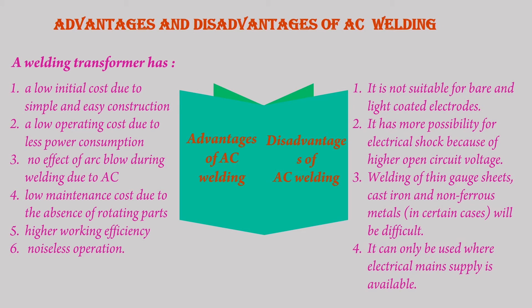Disadvantages of AC Welding: 1. It is not suitable for bare and light coated electrodes. 2. It has more possibility for electrical shock because of higher open circuit voltage. 3. Welding of thin gauge sheets, cast iron, and non-ferrous metals in certain cases will be difficult. 4. It can only be used where an electrical main supply is available.